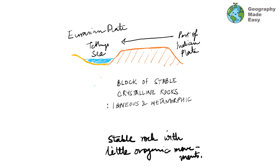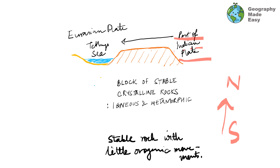Plate tectonics very interestingly explains the formation of the peninsular plateau. The peninsular plateau was part of the Indian plate, which was moving towards the Eurasian plate — the Eurasian plate in the north and the Indian plate in the south, moving from south towards north. The peninsular plateau is made out of stable crystalline rocks, mostly of igneous and metamorphic nature, which are hard and resistant — harder and much more resistant than sedimentary rocks.